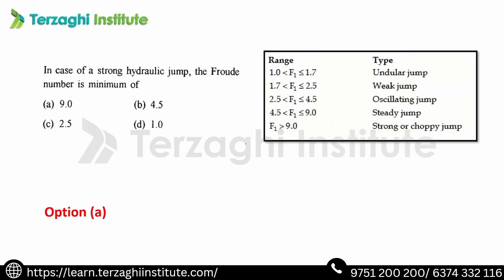In the case of a strong hydraulic jump, the Froude number is greater than 9. From the classification table already discussed, Froude number greater than 9 corresponds to a strong jump.